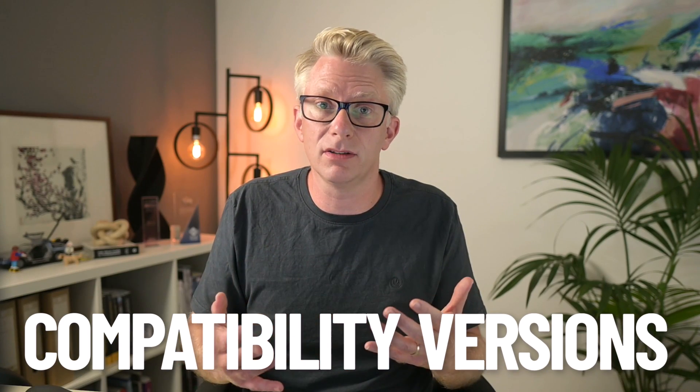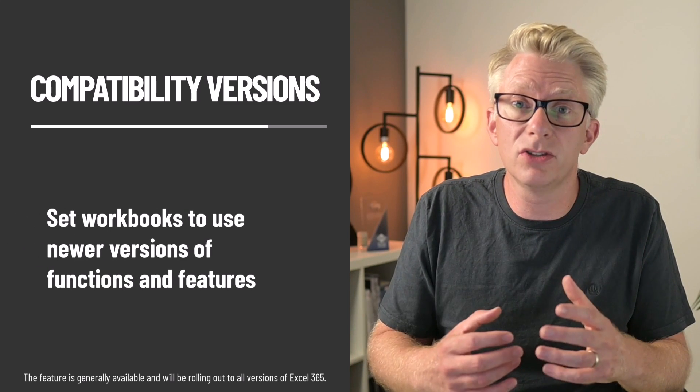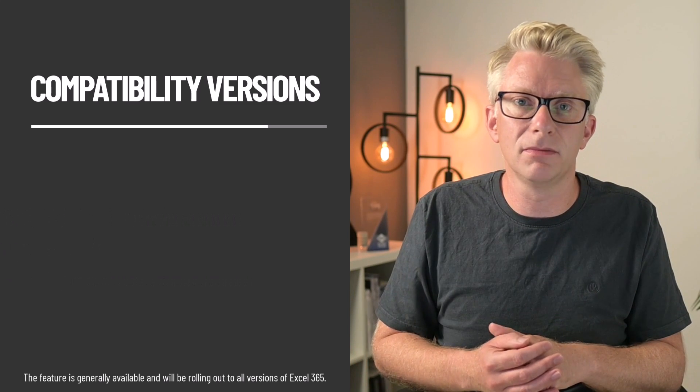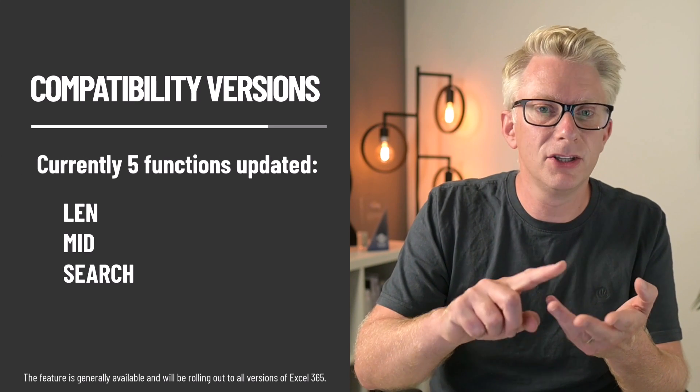So how have Microsoft solved this? Well they've introduced a feature called compatibility versions. This means users can set workbooks to use newer versions of functions and features. Initially they've updated just five functions: LEN, MID, SEARCH, FIND, and REPLACE, because these functions now support emoji characters, as I'll show in the next demo. But remember this specific example isn't the star of the show — the fact this is possible using compatibility versions and what this means for the future of Excel, that is the star of the show.